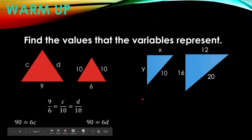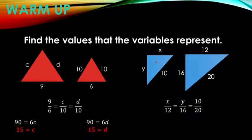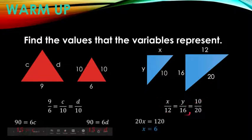How about this one? By proportionality theorem, we have X is to 12, Y is to 16, 10 is to 20. So we'll find it by using cross multiplication.